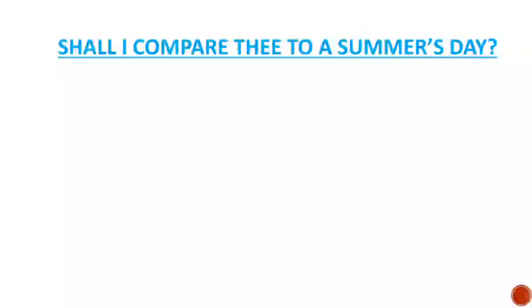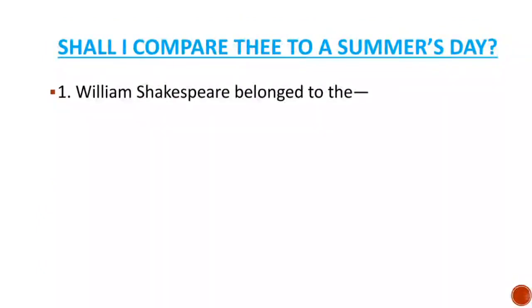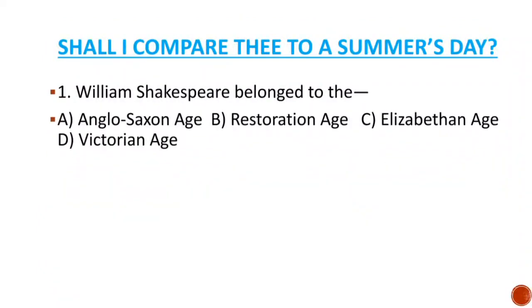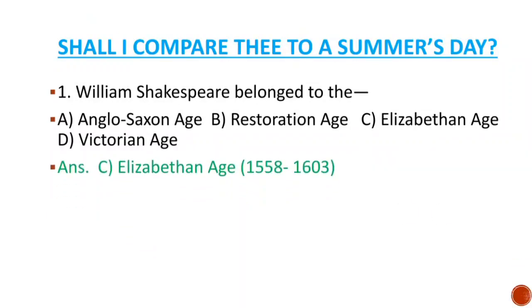Today's first MCQ is: William Shakespeare belongs to the — options are Anglo-Saxon, Restoration, Elizabethan, Victorian. We know that William Shakespeare lived during the period of 1564 to 1616, and the Elizabethan era is characterized with the reign of Elizabeth the First in England, who ruled during the period from 1558 to 1603. Hence the right answer is option C, Elizabethan.